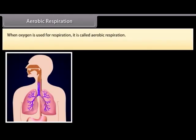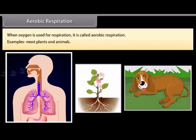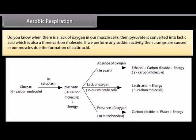When oxygen is used for respiration, it is called aerobic respiration. Examples include most plants and animals. When there is a lack of oxygen in muscle cells, pyruvate is converted into lactic acid, which is also a 3-carbon molecule. If we perform any sudden activity, cramps are caused in our muscles due to the formation of lactic acid.